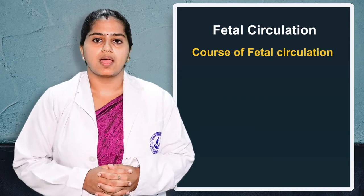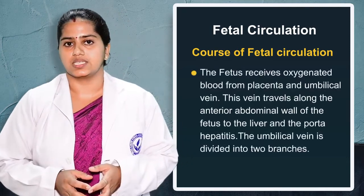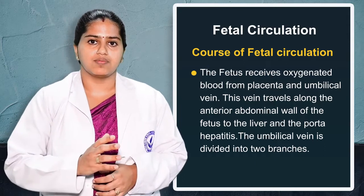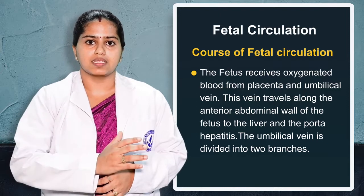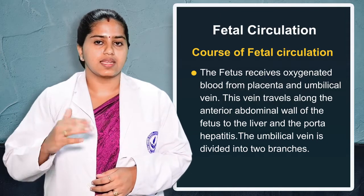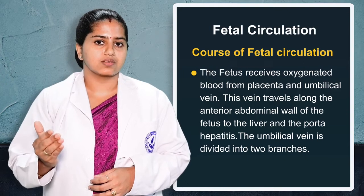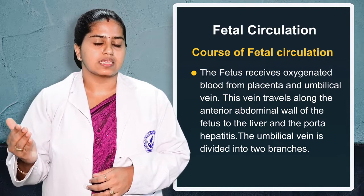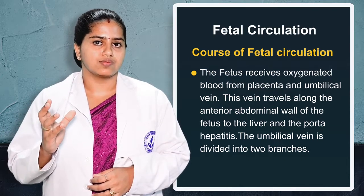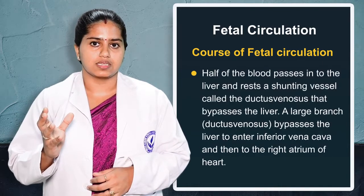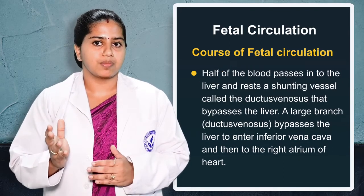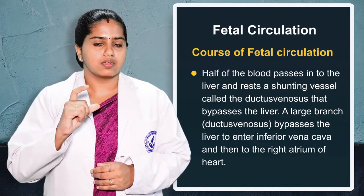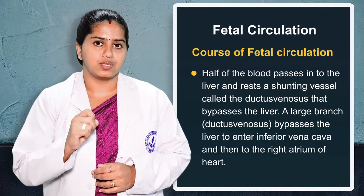Now we will see what the course of fetal circulation is. About 80% of oxygenated blood is carried by the umbilical vein from the placenta to the fetus, reaching the umbilicus of the fetus through the abdominal wall, then reaching the hepatic portal side. There a large shunt is formed known as the ductus venosus, where the umbilical vein bifurcates — part goes to the portal side and part meets the inferior vena cava.